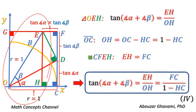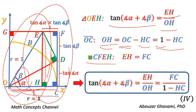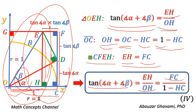In right triangle OEH, tangent of angle alpha plus angle beta equals the length of front side EH divided by the length of adjacent side OH. On line segment OC, length of side OH equals length of side OC minus length of side HC. Length of side OC equals the radius of the unit circle, equal to 1. Thus, length of side OH equals 1 minus HC.